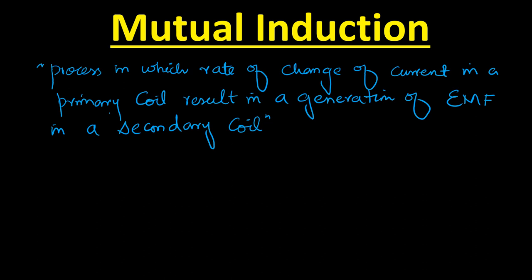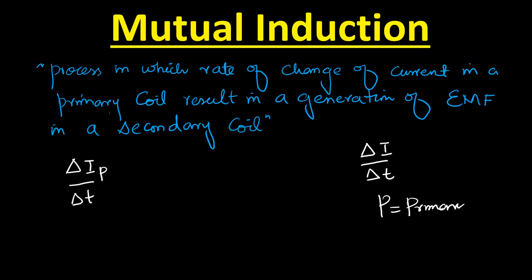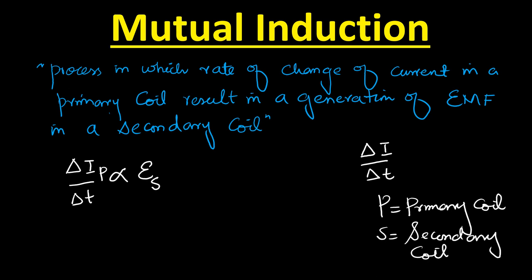The rate of change of current is basically the change in current divided by time. This rate of change of current takes place in a primary coil — subscript P represents primary coil. The rate of change of current in the primary coil is directly proportional to the induced EMF in the secondary coil — S represents secondary coil. So the induced EMF in the secondary coil is equal to a constant multiplied by the rate of change of current in the primary coil.